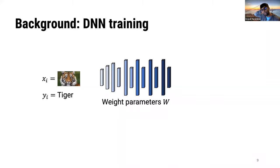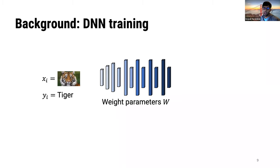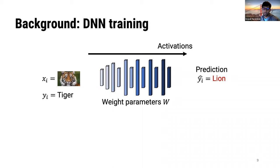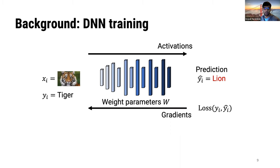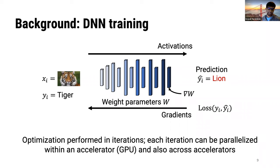Training a deep neural network involves finding weight parameters W that fit a training dataset of inputs and labels. Consider an image classification model: a forward pass generates intermediate activations and a prediction. Errors between the prediction and true label, encoded through a loss function, are back-propagated in a backward pass, generating weight gradients used to update the model's parameters. The backward pass uses both weight parameters and intermediate activations. Optimization is performed iteratively and can be parallelized within a single accelerator or across multiple accelerators.